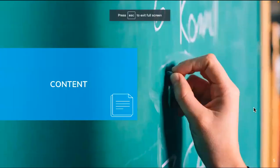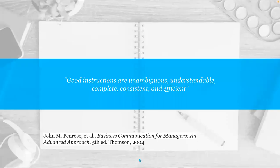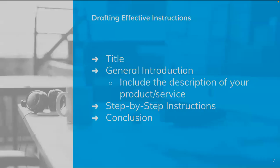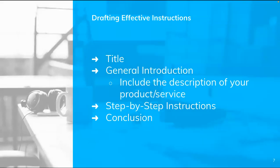Once you have a handle on your rhetorical situation, you can start thinking about content. One guiding principle: good instructions are unambiguous, understandable, complete, consistent, and efficient. There are four basic parts to an instruction manual: the title, the general introduction — which includes the description of your product or service — step-by-step instructions, and a conclusion.